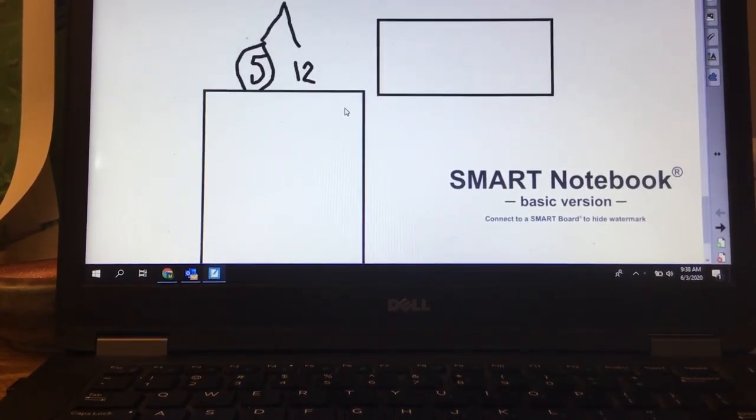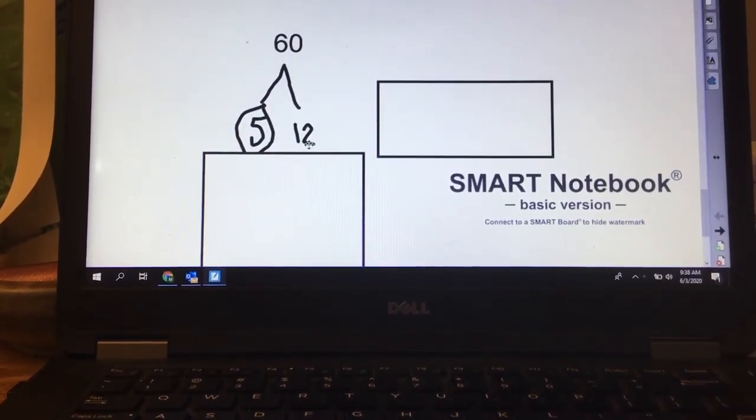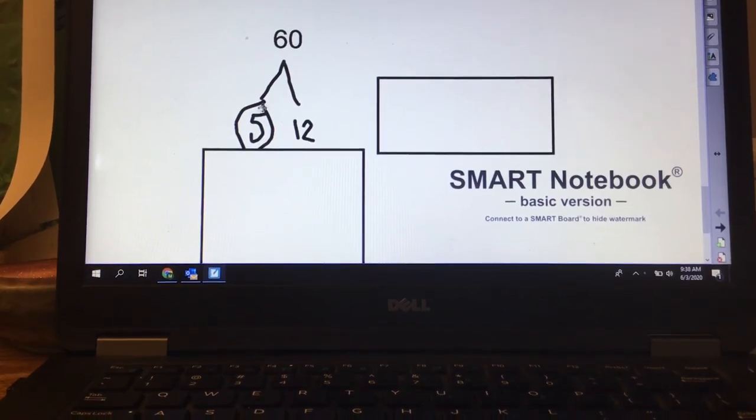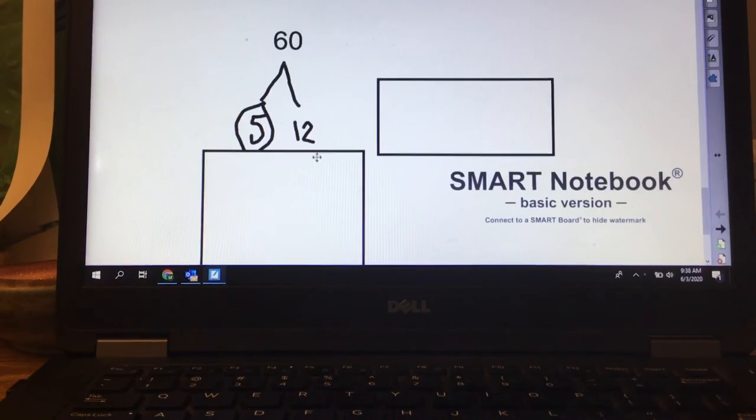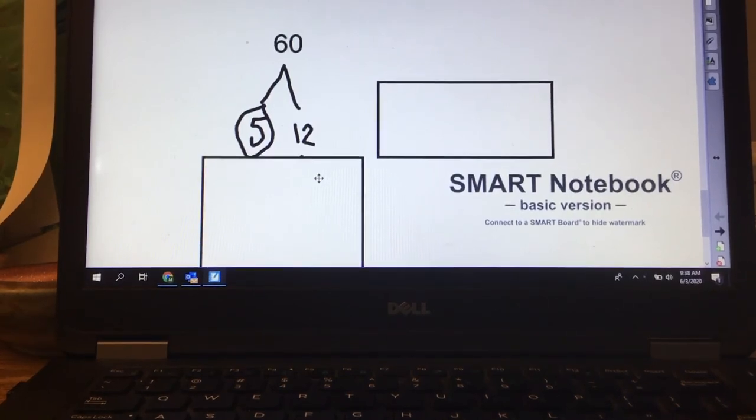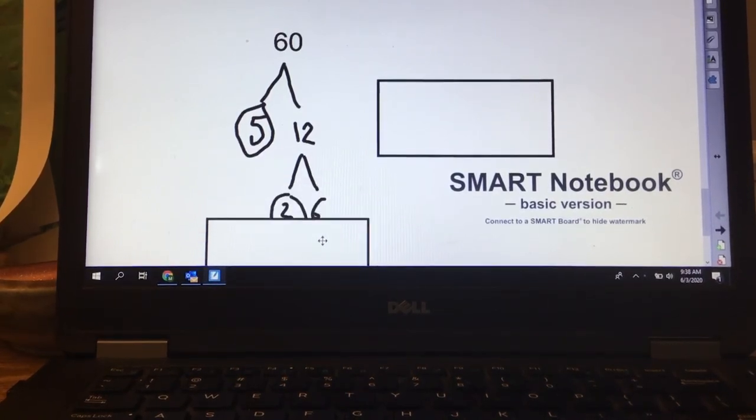So I divide by 5 and I'm left with 12. So I circle my 5 because it's prime. I'm left with 12, which is composite. It ends in a 2, so it's even. I'm going to divide it by 2.